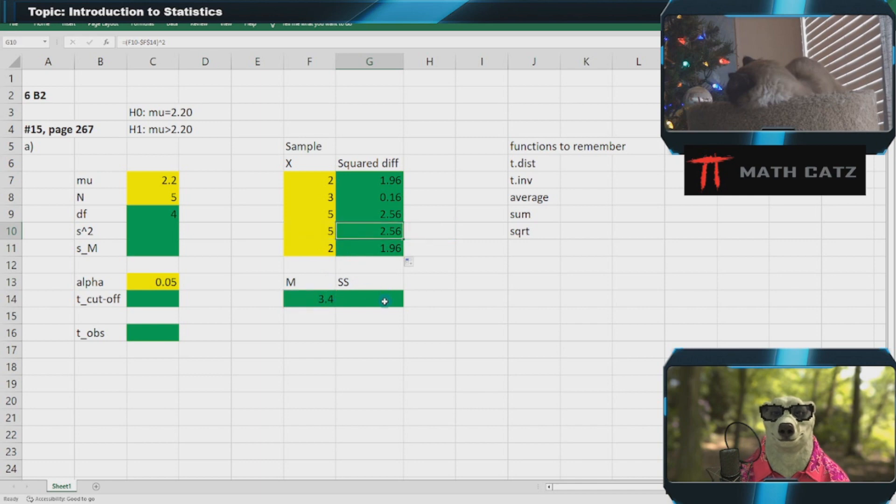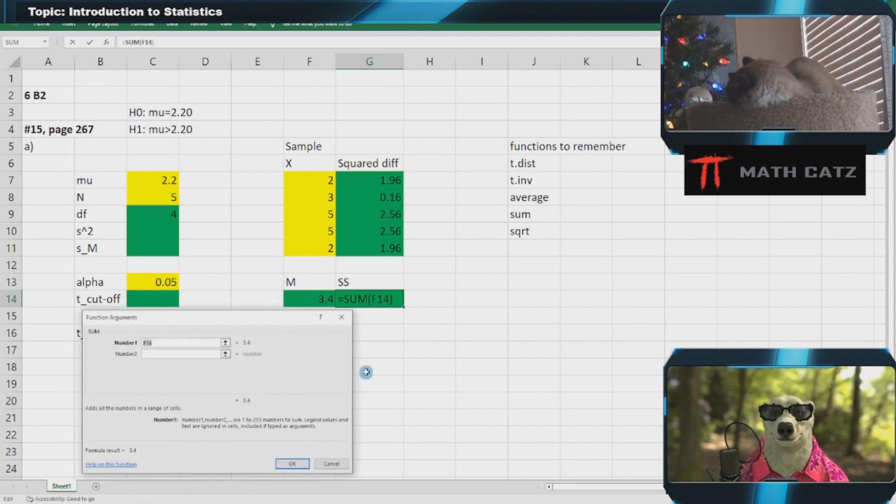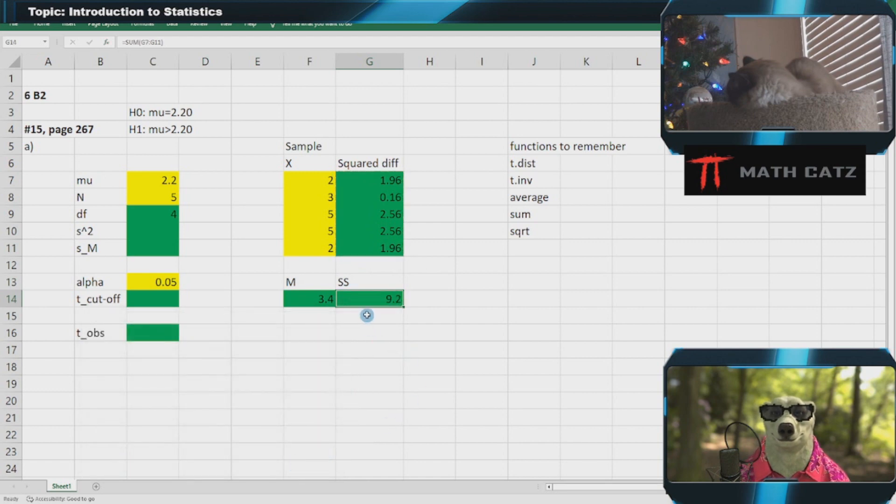Then we're simply going to do the sum of the squared differences here. We use the SUM function, which adds all the numbers, and we get 9.2. The variance is the sum of the squares divided by n minus 1, or the degrees of freedom. That gives us 2.3.